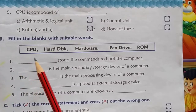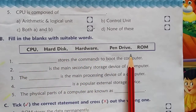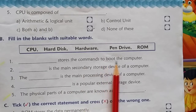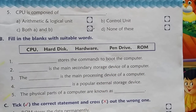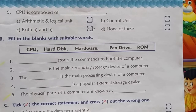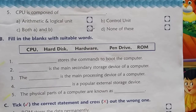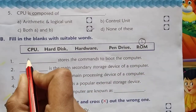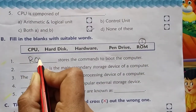Now we move on to fill in the blanks, where options are provided for you. First blank: blank stores the commands to boot the computer. When you start the computer, a small circle rotates on the monitor and the boot commands are stored in ROM — the read-only memory. So you will write ROM here.